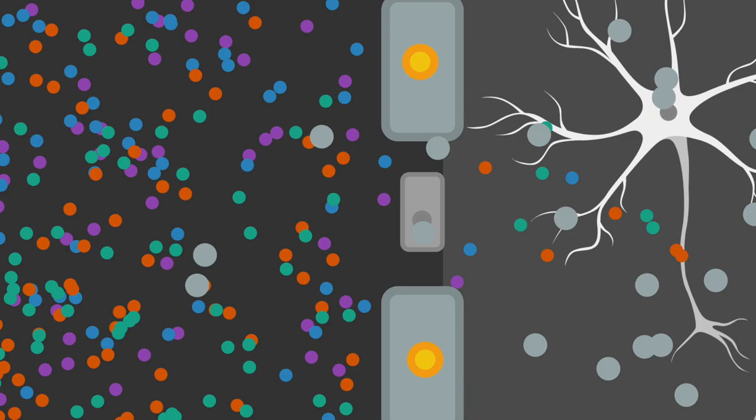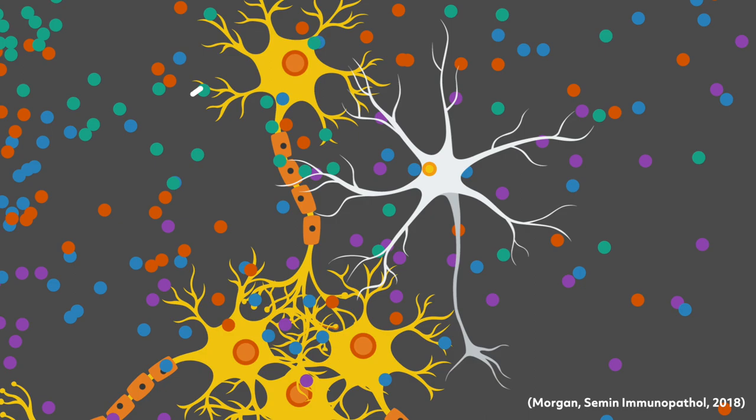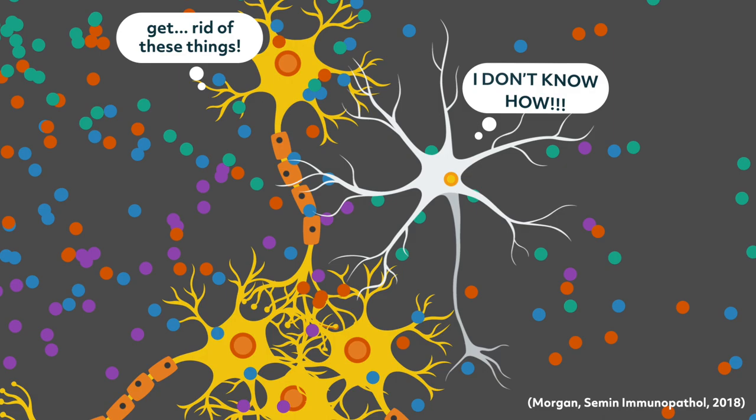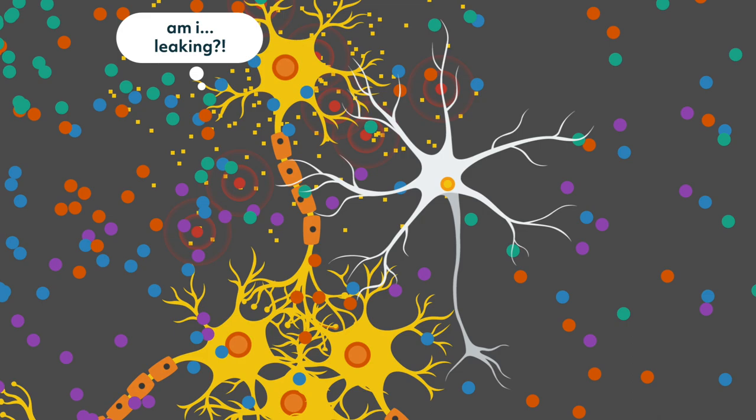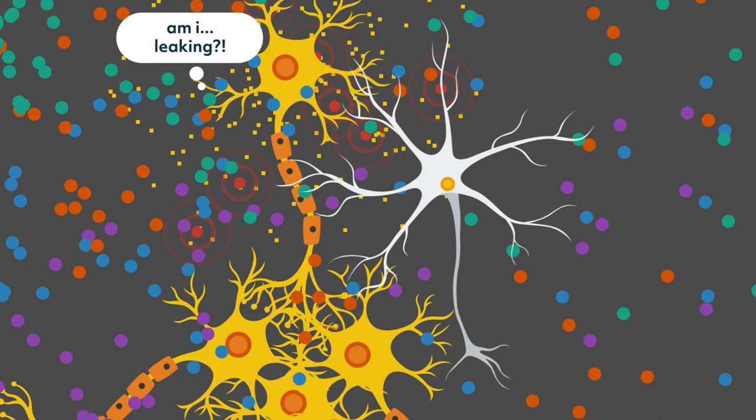Once inside the brain, the complement system wreaks havoc on the neurons. Because complement isn't normally allowed inside the brain, brain cells have a hard time controlling these tiny bombs. In fact, some researchers have found that neurons can actually activate complement proteins, resulting in their own death. This is perhaps a perfect demonstration of the power and ruthlessness of the human immune system.